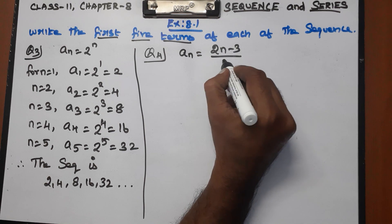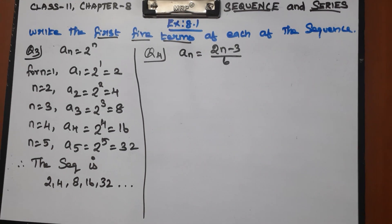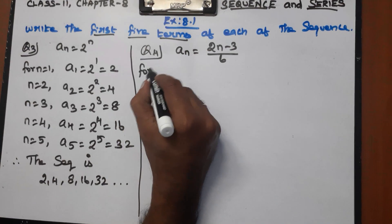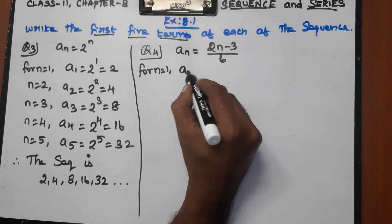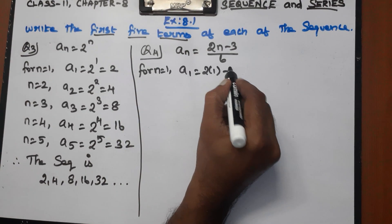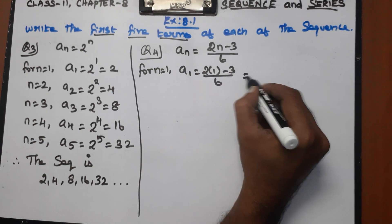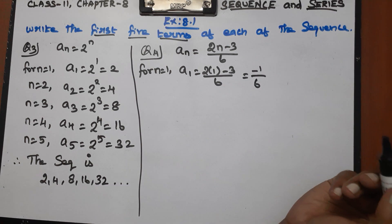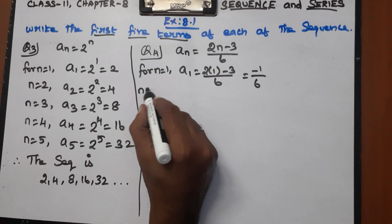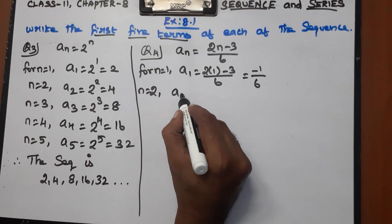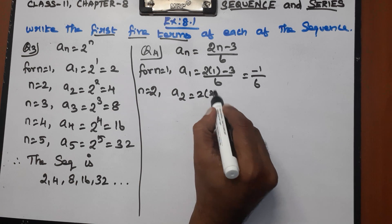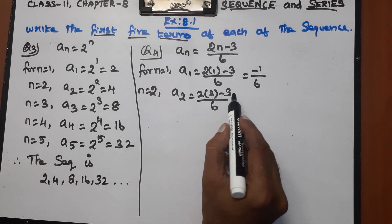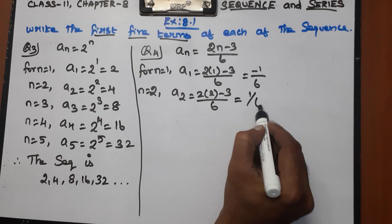Question number 4: an equals (2n minus 3) divided by 6. For n equal to 1: a1 equals (2 into 1 minus 3) divided by 6 equals (2 minus 3) divided by 6 equals minus 1 by 6. Next, n equal to 2: a2 equals (2 into 2 minus 3) divided by 6. 2 into 2 is 4, 4 minus 3 is 1, so a2 equals 1 by 6.